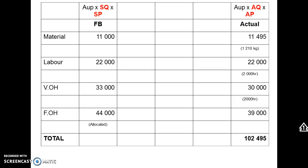So what could be the reasons for the material overspending of 495 Rand? There are two possible causes: we could have paid more per kilogram of raw materials than we should have — that's the purchasing department's responsibility. Or we could have used more kilograms in production than we should have — that's the factory's responsibility, due to waste, theft, evaporation, breakage, inefficiency, or rework. We need to determine whether the variance is due to price or usage.